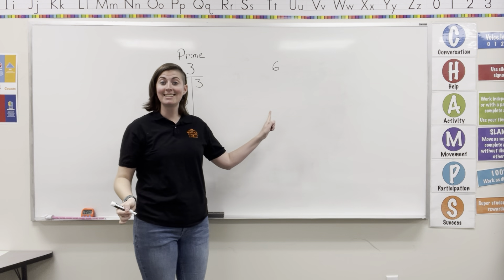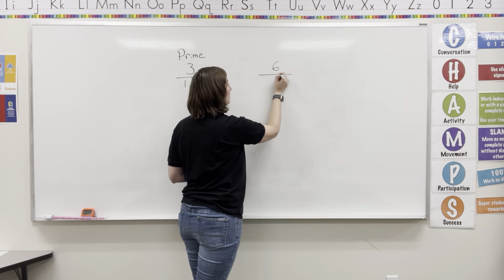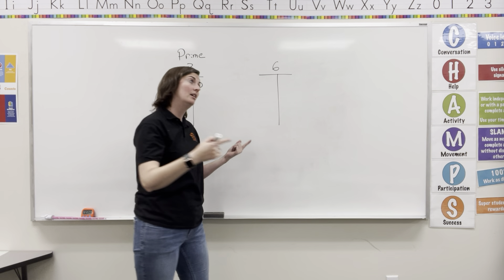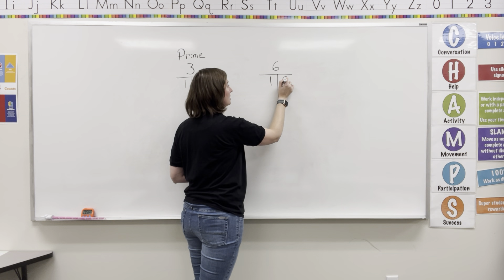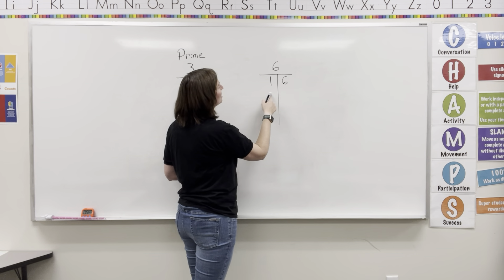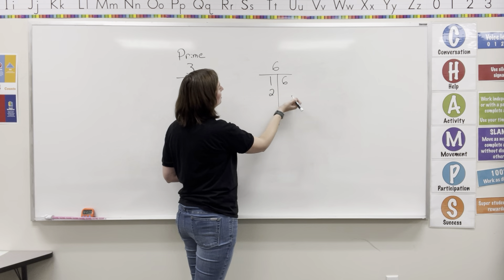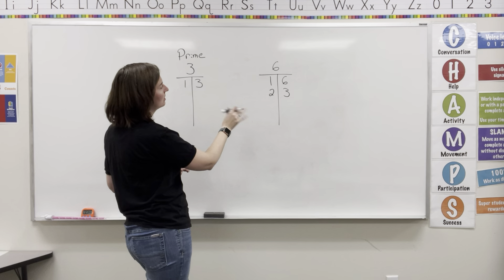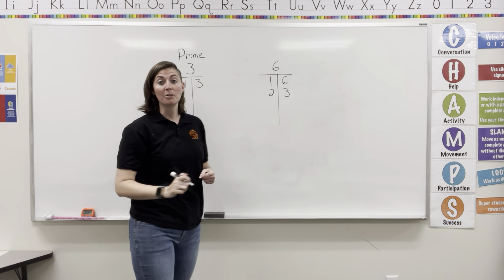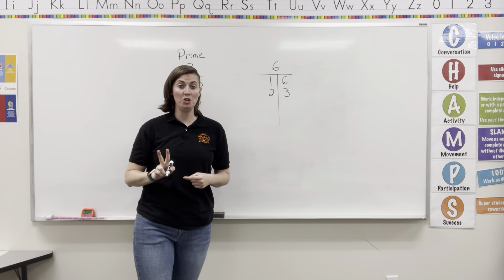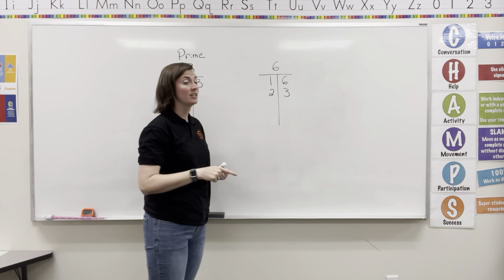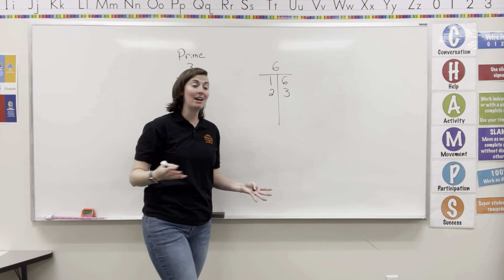Let's check 6. Making our t-chart, always starting with 1 and the number: 1 and 6. Multiply by 2 — yes, I can do 2 and 3. 3 is already up there. 4, 5, 6. So this has more than two factors — it has 1, 2, 3, 4 factors — which makes it composite.